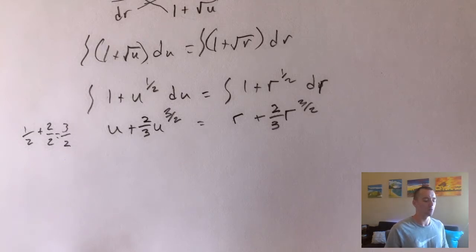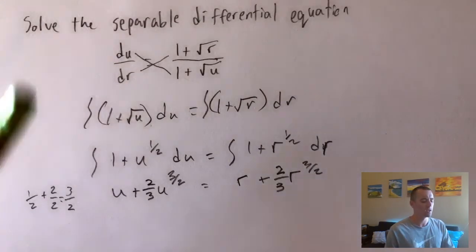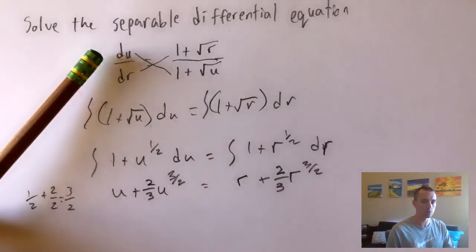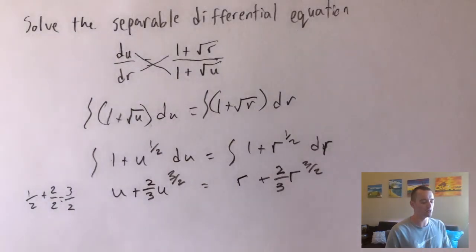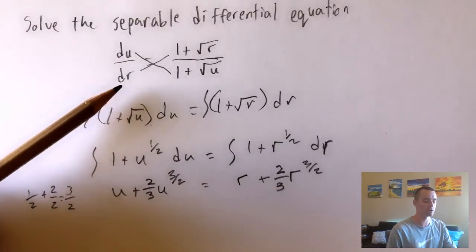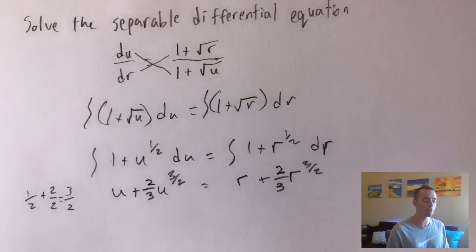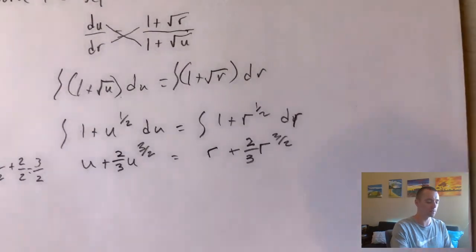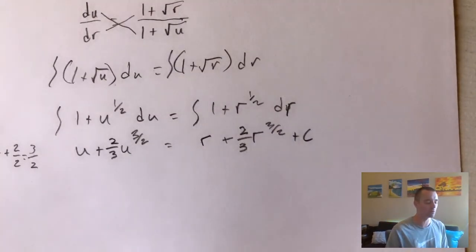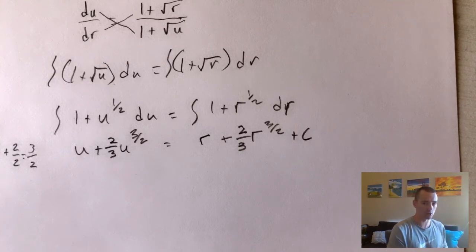When doing separable differential equations, you add plus C to the side of the equation corresponding to the variable of the function you're given. In this case, we were given du/dr, which tells us that u is a function of the variable r — whatever's on the bottom is your variable, whatever's on the top is your function. So we want to solve for u as a function of r, which means we add plus C on the r side. At this point we've done the integration step, so we no longer have du or dr — we just have u's and r's, which is what we want.